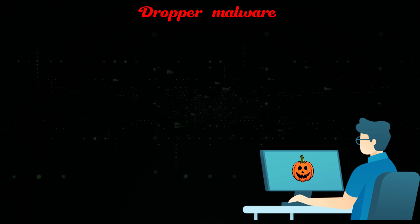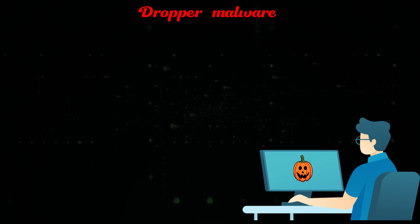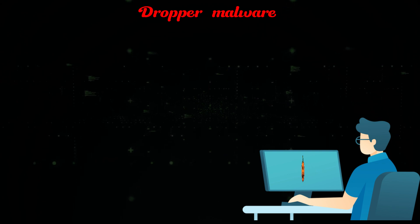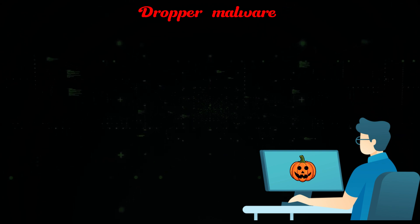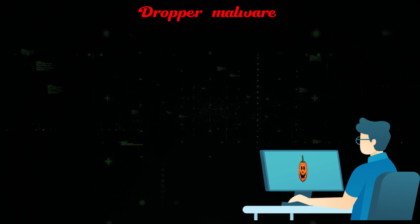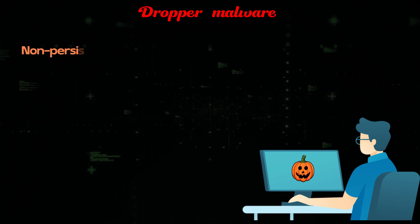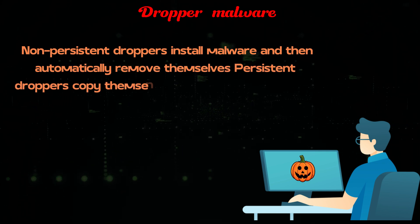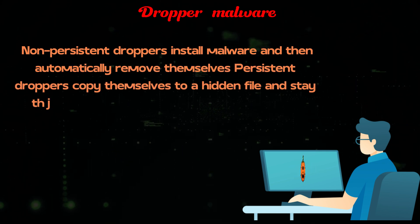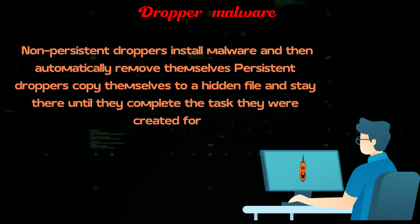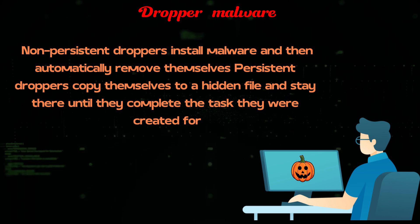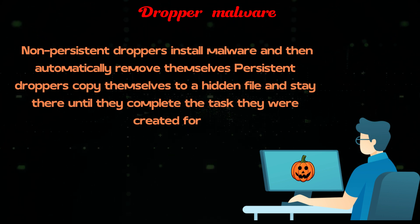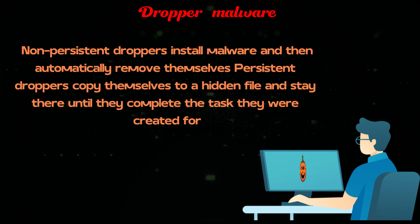Droppers, like many of their larger Trojan horse counterparts, can be persistent or non-persistent. Non-persistent droppers install malware and then automatically remove themselves. Persistent droppers copy themselves to a hidden file and stay there until they complete the task they were created for.